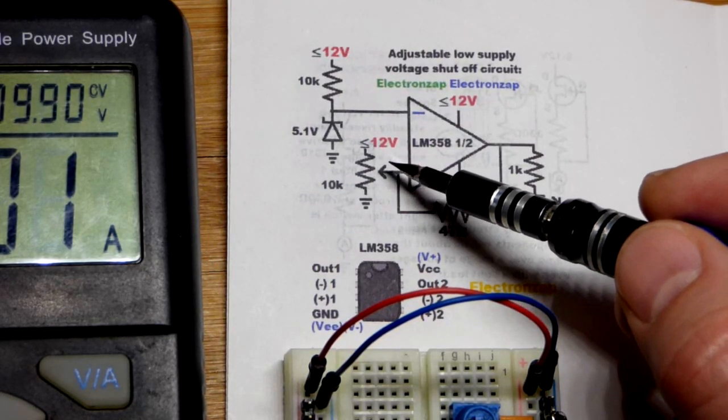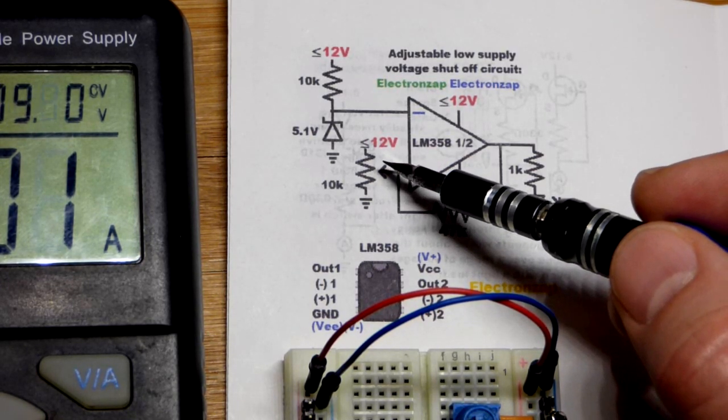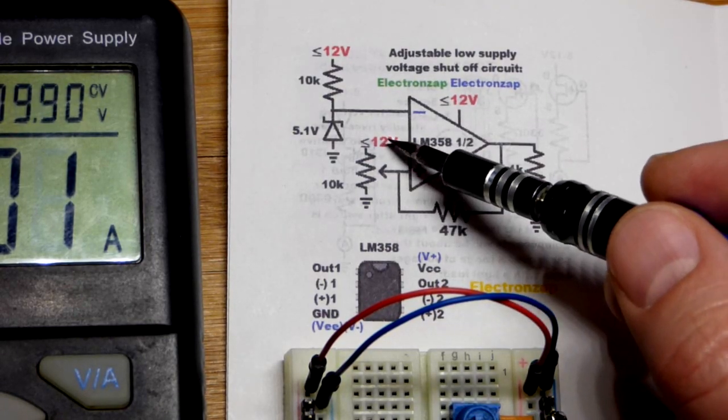When the output's high, it's going to pull up that voltage a little bit. So we'll have to go down a little bit extra before the output goes low. Then it's going to pull that voltage down a little bit.